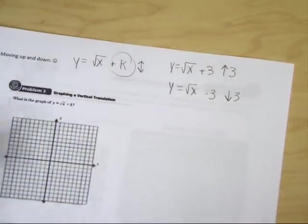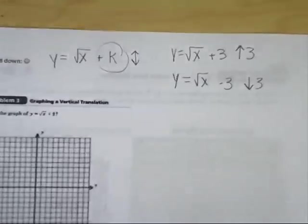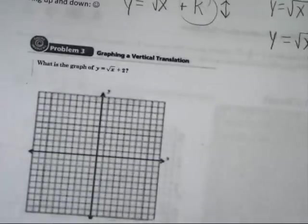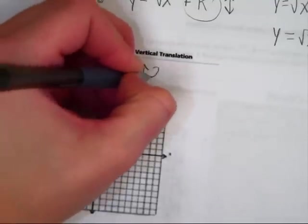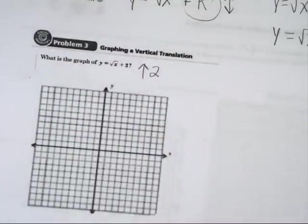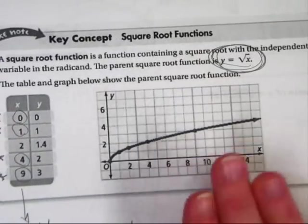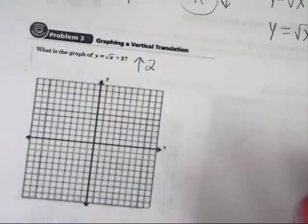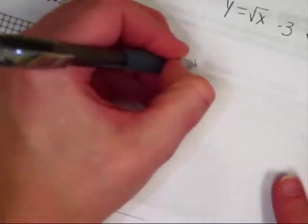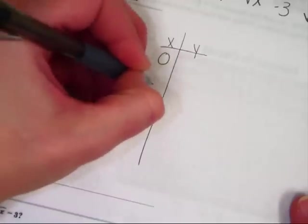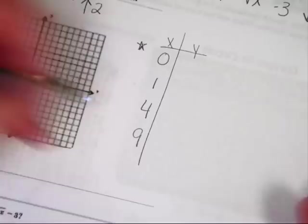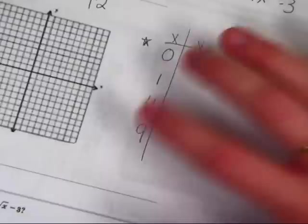Let's try applying this. In problem 3, y equals the square root of x plus 2. We should know that's going to move our normal graph — the parent graph — up 2 units, but we're going to make an x-y chart. Now if you listened in the first video, you should know that on the x side, I want you to pick perfect squares. So let's pick some perfect squares: 0, 1, 4, 9.